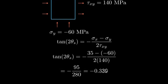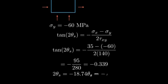This simplifies to negative 95 over 280, which equals negative 0.339. Taking the inverse tangent, we get 2 theta s equals negative 18.74 degrees. Therefore theta s equals negative 9.37 degrees.